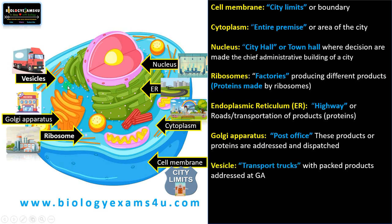Then vesicles — from the Golgi apparatus, these products are dispatched inside vesicles — just like a transport truck that carries these products to different parts of the city. These products are addressed at the Golgi apparatus, packed in vesicles, and transported to different parts of the cell.